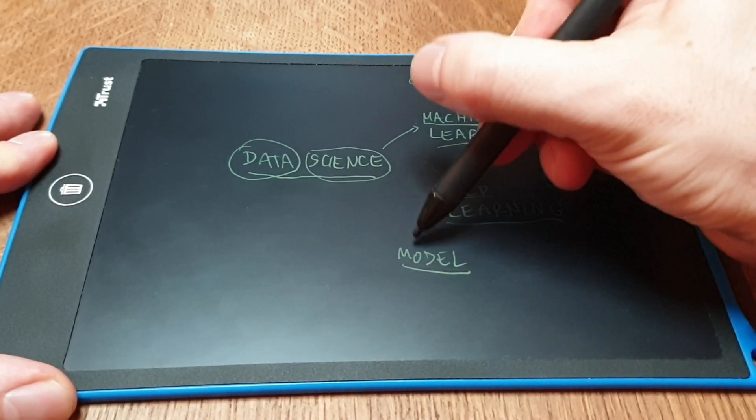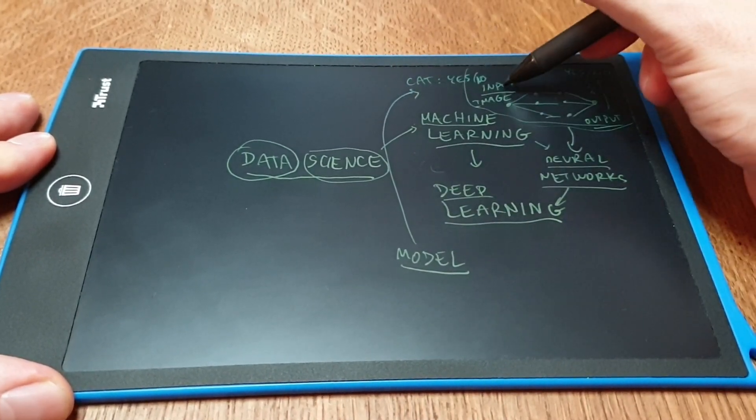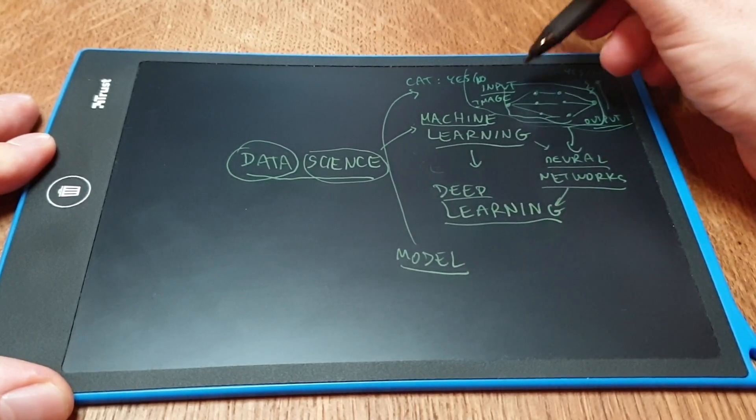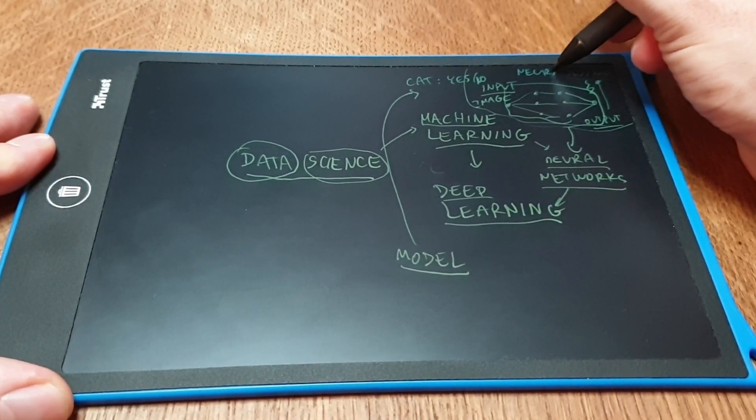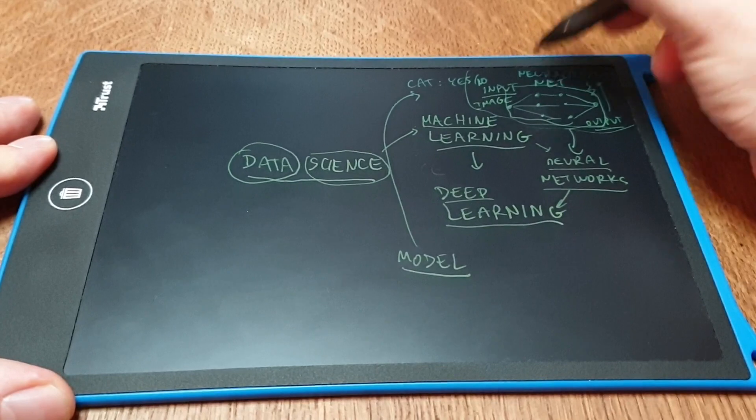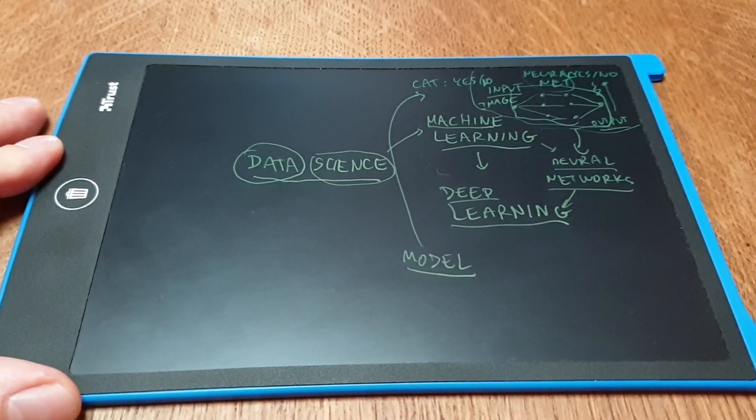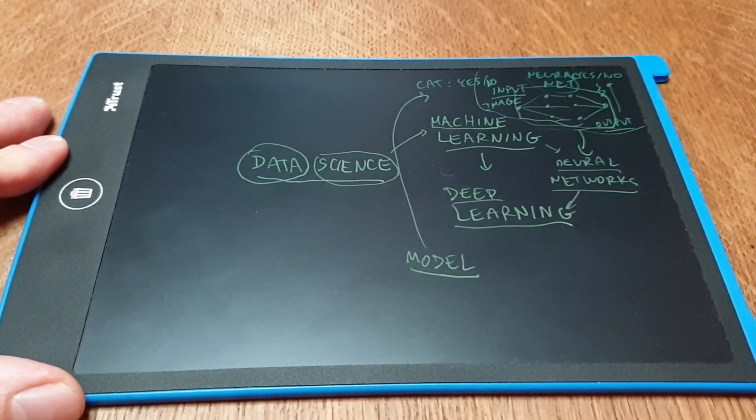we built a model, which this is the model, this is the architecture of the algorithm. So neural net is our model for trying to determine whether a photo is a cat or it's not a cat.